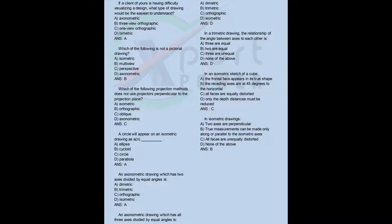In an isometric sketch of a cube: a) the frontal face appears in its true shape, b) the receding axes are at 45 degrees to the horizontal, c) all faces are equally distorted, d) only the depth distances must be reduced. Answer: C. In isometric drawings: a) two axes are perpendicular, b) true measurements can be made only along or parallel to the isometric axes, c) all faces are unequally distorted, d) none of the above. Answer: B.